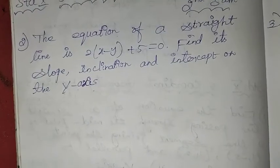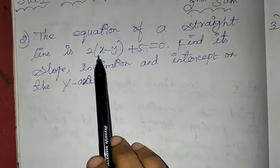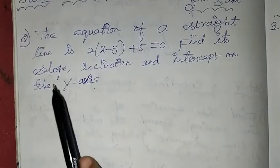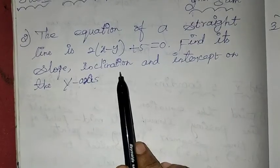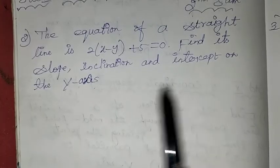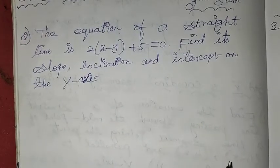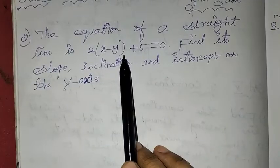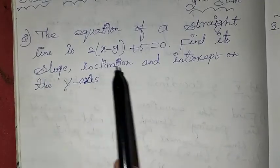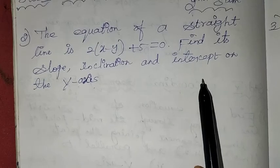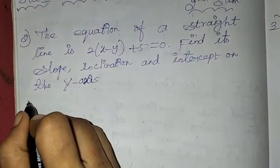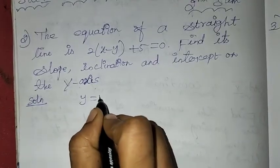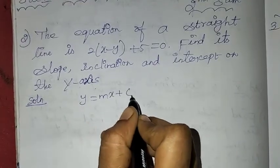In this problem, the equation of a straight line is given. We can find the equation of a straight line and find its slope, inclination, and intercept on the y-axis. We use the slope-intercept formula: y = mx + c.